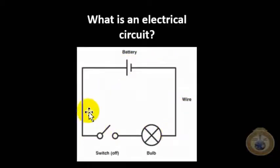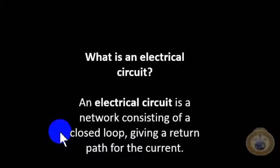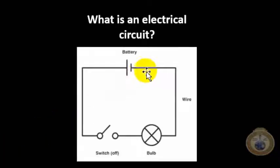Through this system here until we close the switch. This would be like turning the lights on in the bathroom or turning the lights on in the living room. So back to our definition, an electrical circuit is a network consisting of a closed loop giving a return path for the current. In this situation, electrons are leaving but they're not coming back.